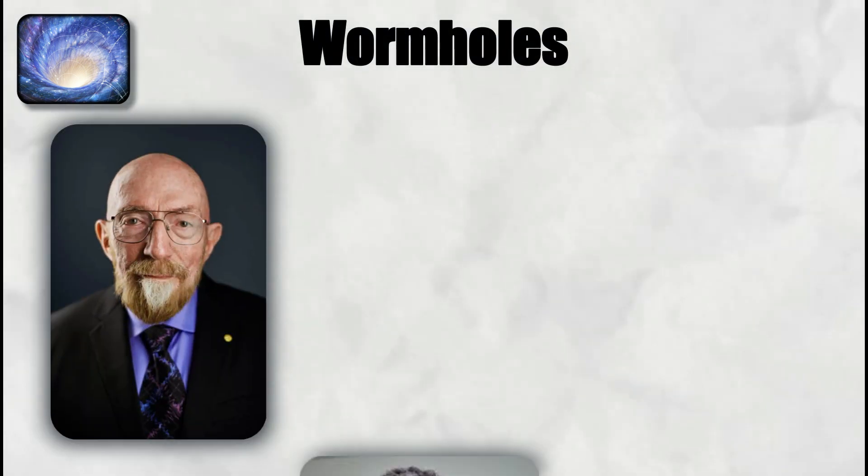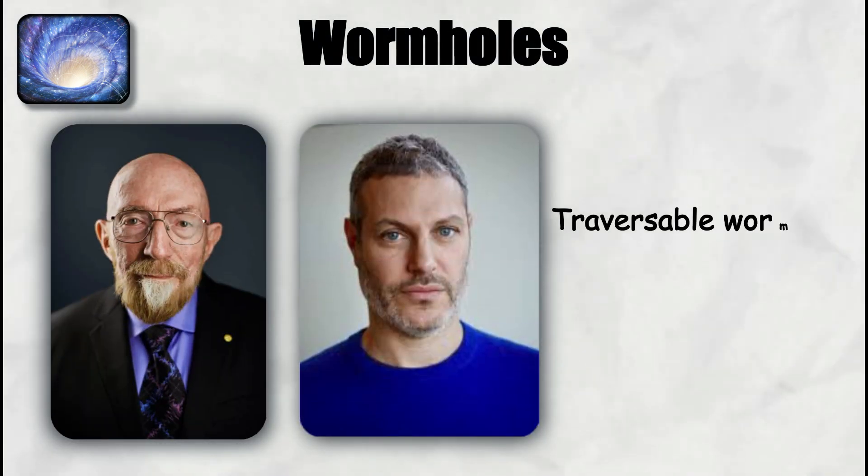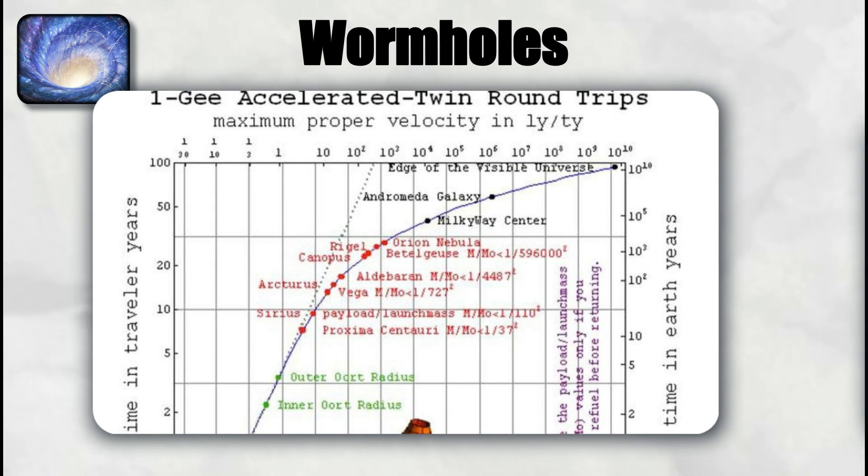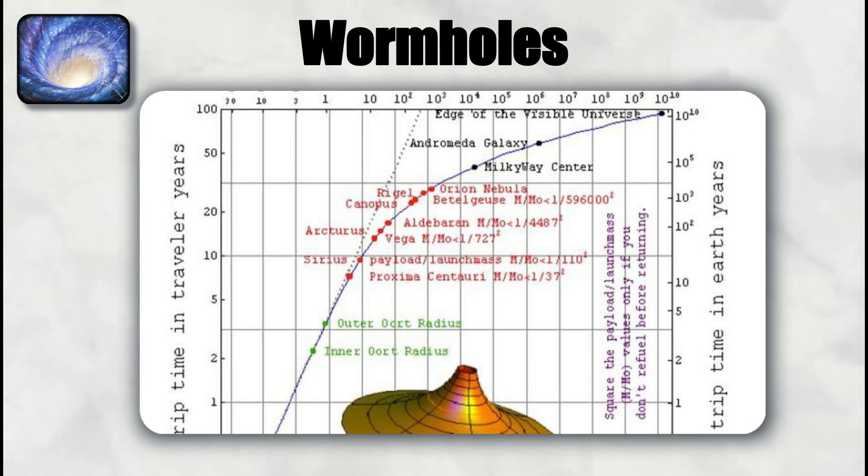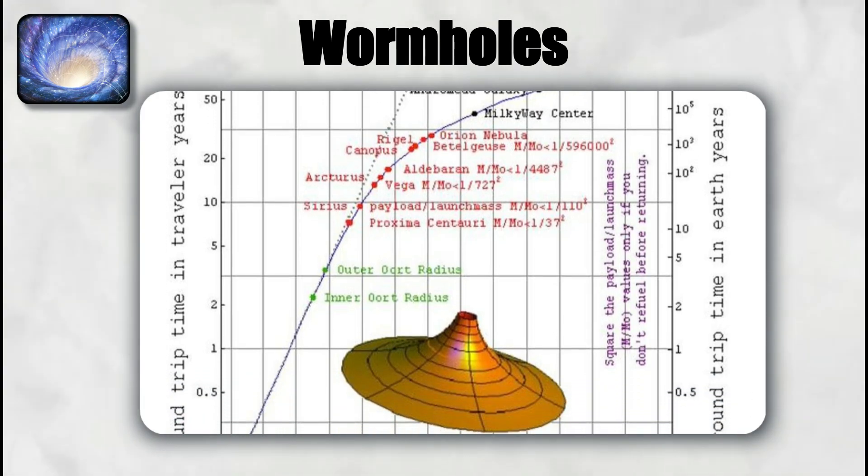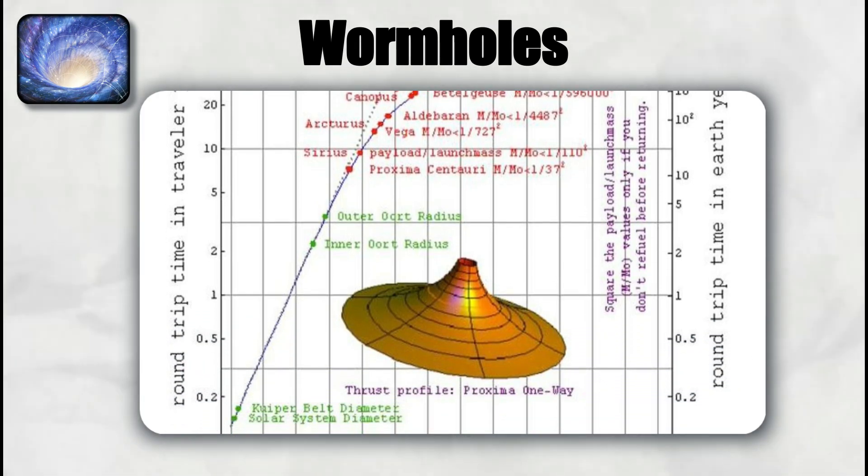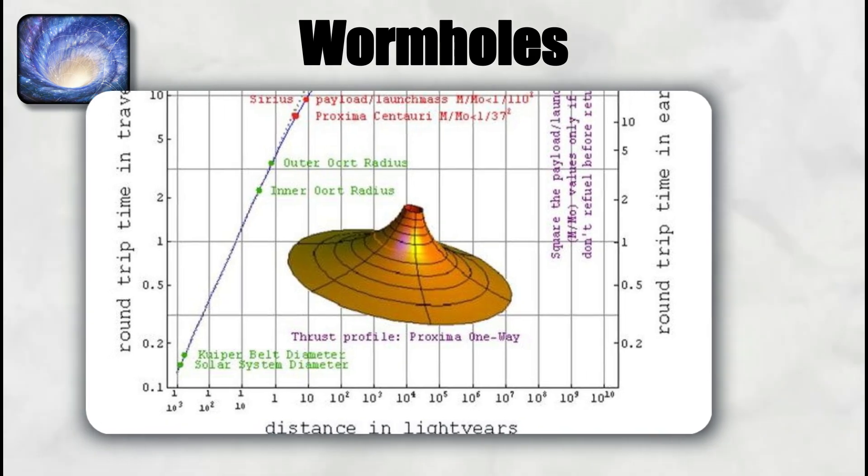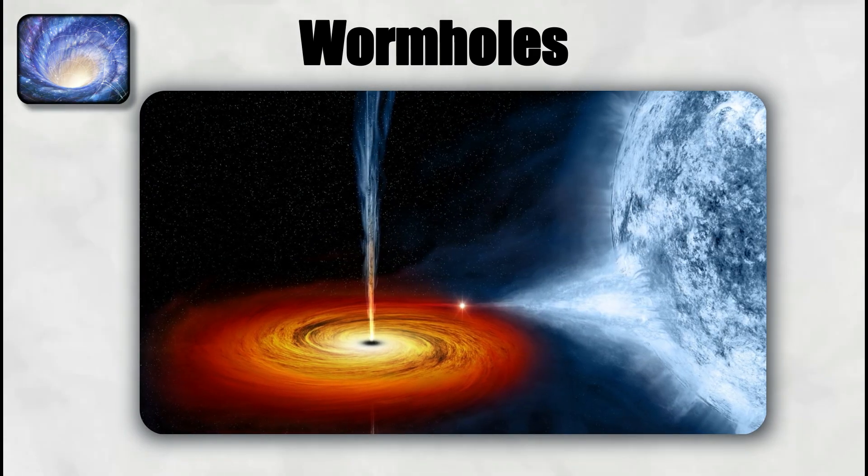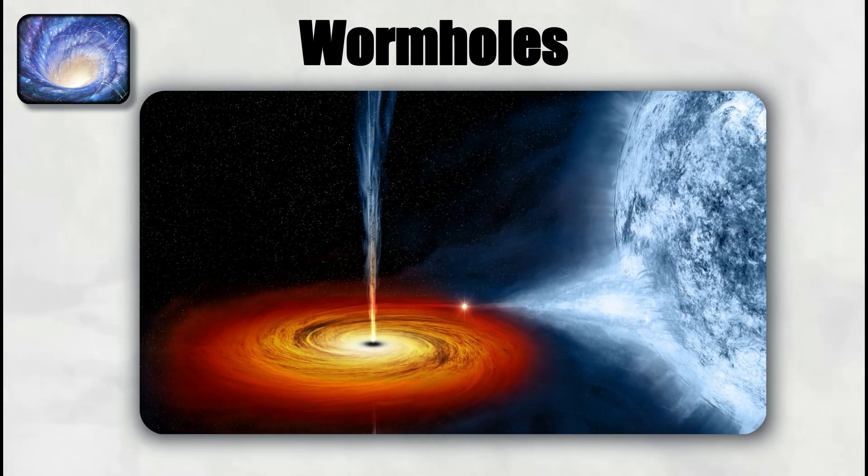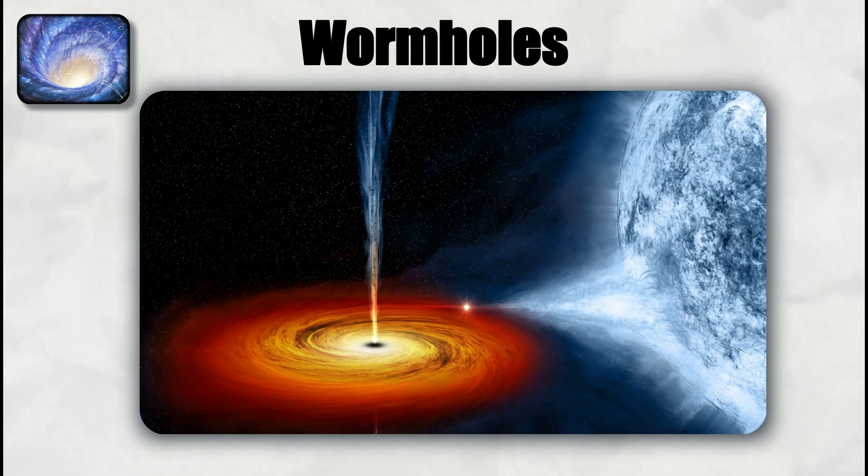Kip Thorne and Michael Morris described a traversable wormhole metric in the 1980s that explicitly required exotic matter. This led to popular interest because the geometry allowed round-trip travel between distant points in less time than light would take through normal space. In that sense, a wormhole functions as a shortcut through spacetime, though not as a literal faster than light drive.